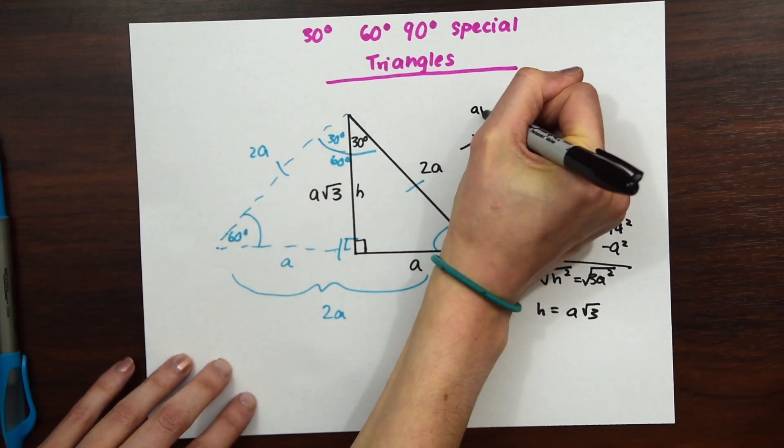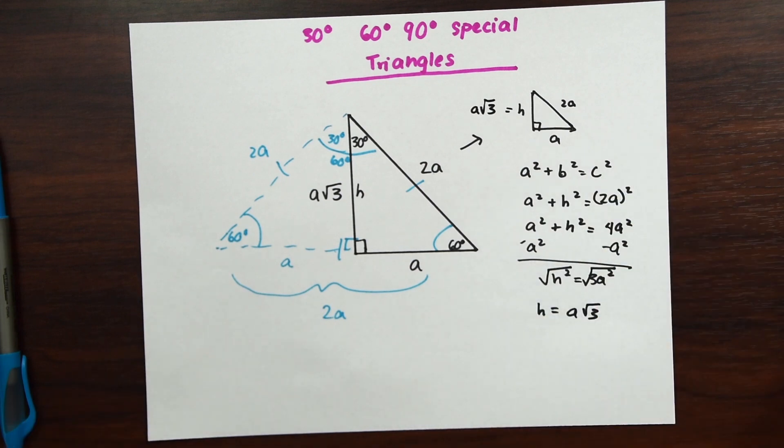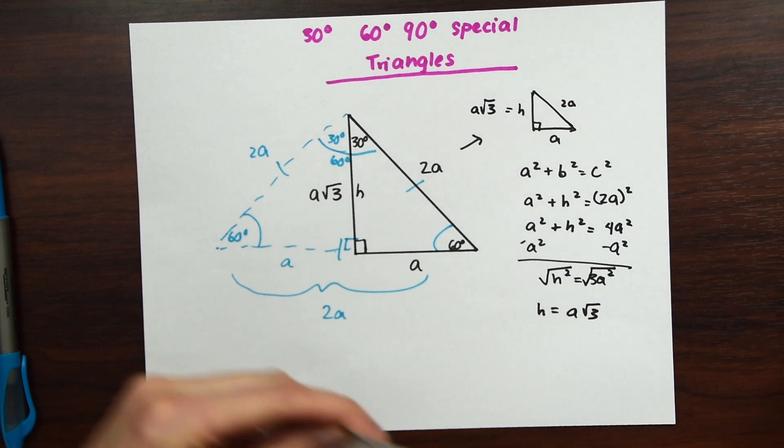Which is exactly the ratio that we have here. This value here for H is A rad 3. So this just shows you why we have these special triangles in the first place and where they come from. So now let's put this to good use and start our examples.